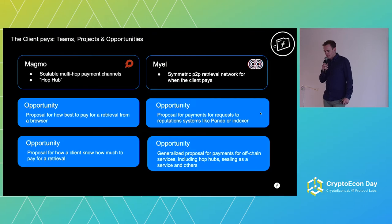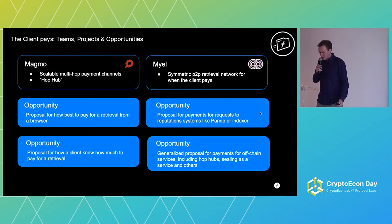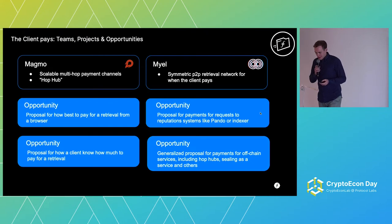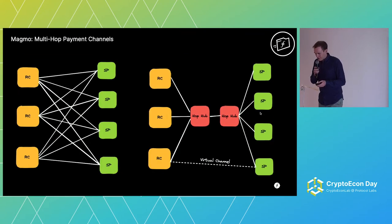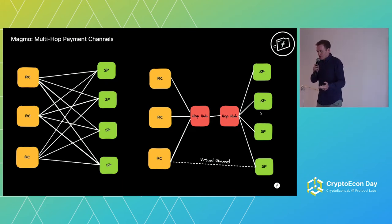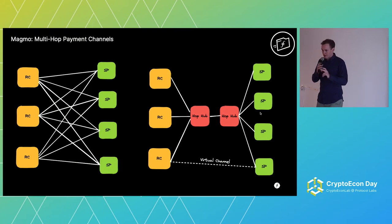In the retrieval market working group, we've seen a few teams start to work on this side of the decision tree, where you're paying for retrievals. The first team is Magmo — they are building scalable multi-hop payment channels. On the left-hand side, retrieval clients have to make payment channels to storage providers in order to retrieve a file in the current Filecoin setup, but this has to be pair-wise between a retrieval client and a storage provider, which means a lot of payment channels.